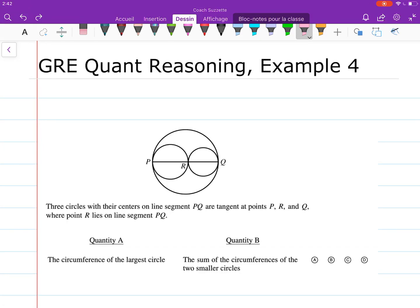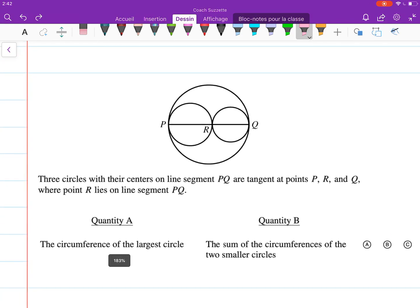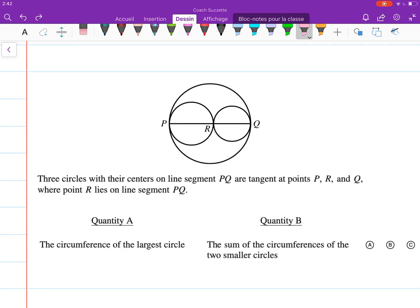Hello and welcome back. Let's do some quant reasoning. We're given a diagram with three circles. Their centers are on line segment PQ and they are tangent at points P, R, and Q, where point R lies on line segment PQ.